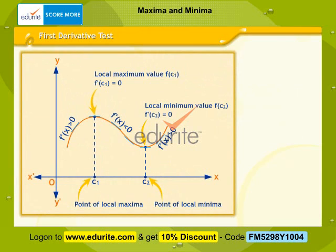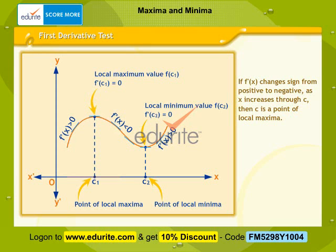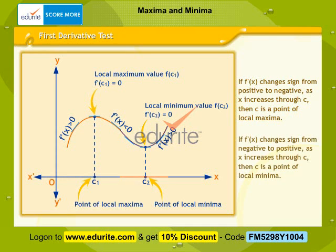Let f be a function defined on an open interval I, and let f be continuous at a critical point c in I. If f'(x) changes sign from positive to negative as x increases through c, then c is a point of local maxima. If f'(x) changes sign from negative to positive as x increases through c, then c is a point of local minima.